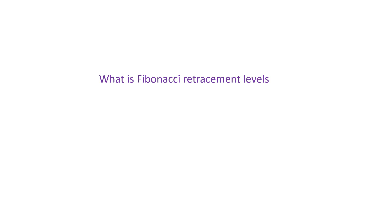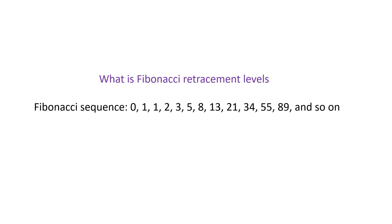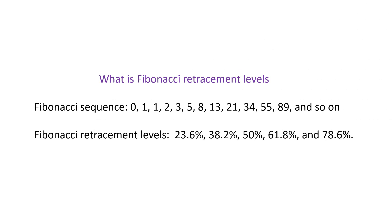The Fibonacci sequence is as follows: 0, 1, 1, 2, 3, 5, 8, 13, 21, 34, 55, 89, and so on. The most important Fibonacci Retracement levels used in financial markets are 23.6, 38.2, 50, 61.8, and 78.6%. Although 50% is not an official Fibonacci ratio, it is commonly used.